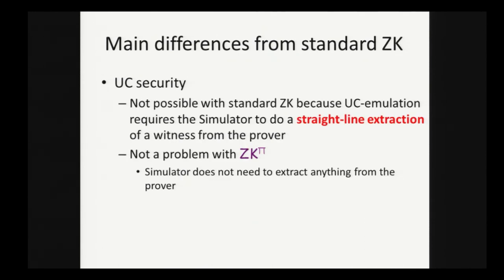One implication of these differences is that UC security is not inherently a problem for us because the simulator doesn't need to extract anything from the prover. Normally you have to have extra things like setup assumptions because the simulator needs to do a straight line extraction of a witness.